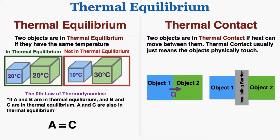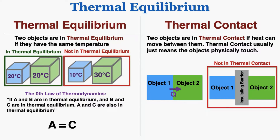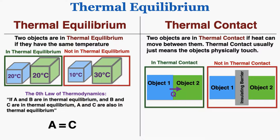Two objects are in thermal contact if heat can move between them. Thermal contact usually just means two objects physically touch. These two objects are not in thermal contact with each other because there's an insulating barrier between them — a barrier that prevents heat from moving through it. These two objects are in thermal contact because they're making physical contact and heat is moving from one object to the other.